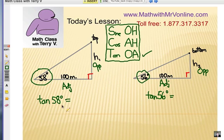So if we have the tangent of 58 degrees, we know that's going to be opposite over adjacent. So it's H1 divided by 100. And the same with the other triangle. That would be tangent of 56 is H2 divided by 100. Let's go ahead and find these tangent values on a calculator.